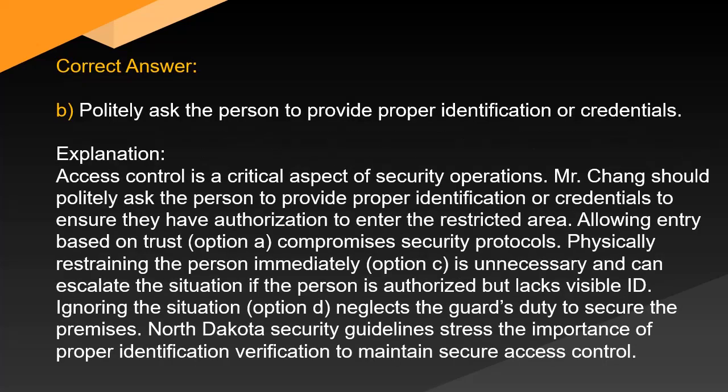Correct answer: B. Politely ask the person to provide proper identification or credentials. Access control is a critical aspect of security operations. Mr. Chang should politely ask the person to provide proper identification or credentials to ensure they have authorization to enter the restricted area. Allowing entry based on trust (option A) compromises security protocols. Physically restraining the person immediately (option C) is unnecessary and can escalate the situation if the person is authorized but lacks visible ID. Ignoring the situation (option D) neglects the guard's duty to secure the premises. North Dakota security guidelines stress the importance of proper identification verification to maintain secure access control.